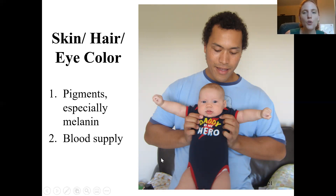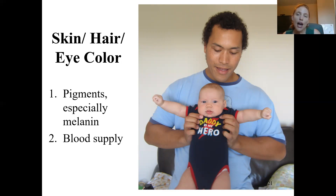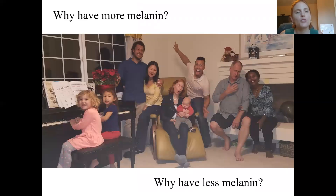Skin color is a mixture of various factors. You have pigments such as melanin and keratin, and you also have blood supply — blood's reddish color gives some coloring, especially if you don't have much pigment to cover it up. But we're going to focus on melanin, since we're looking at melanocytes.